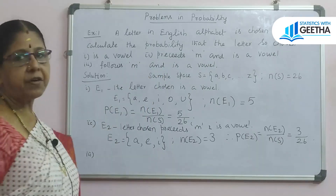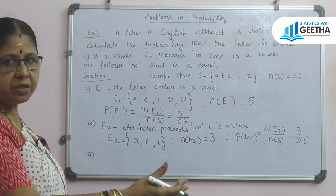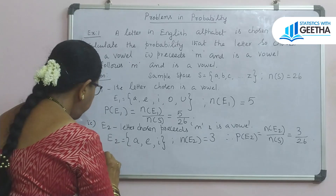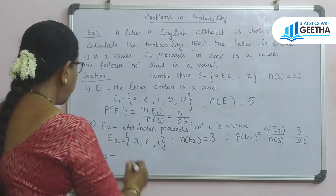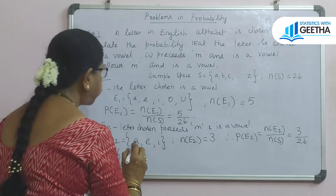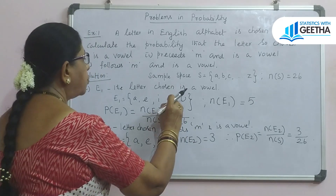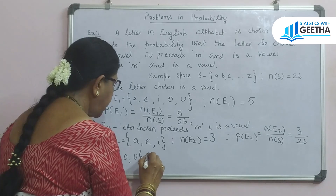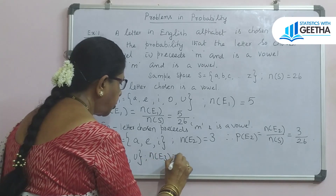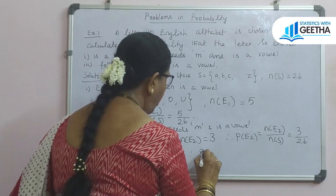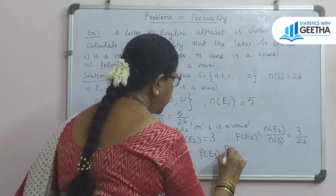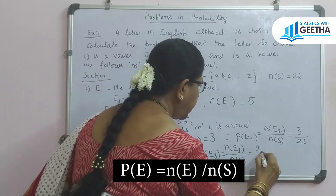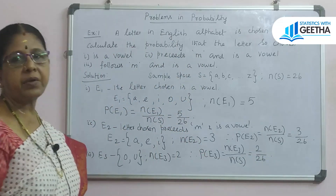For the third subdivision, let E3 be the event that the letter chosen follows M and is a vowel. The letters after M are N, O, P, Q, R, S, T, U, V, W, X, Y, Z. The vowels among these are O and U, so N of E3 equals 2. Therefore, the probability of E3 equals 2 divided by 26.